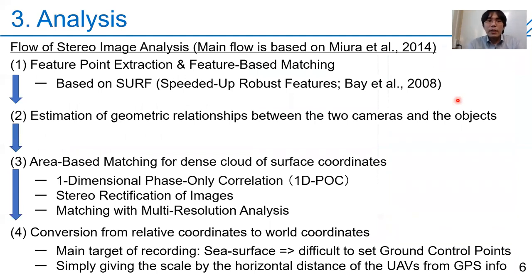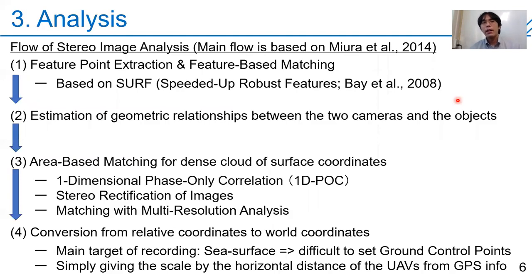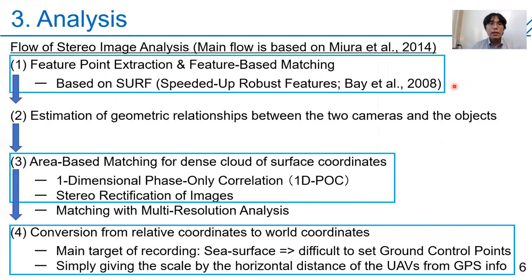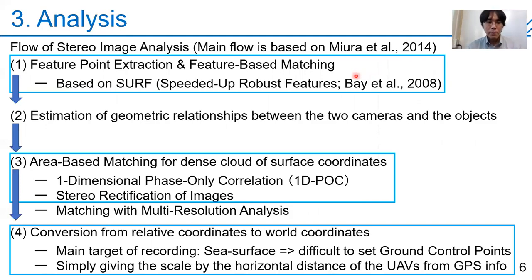This is the main flow of the stereo image analysis, which follows existing techniques. This analysis flow is very similar to topography measurement by UAVs. There are three key steps where the difference in the target object — the water surface — should affect the accuracy or applicability of the method, and today I want to talk about these three steps mainly.